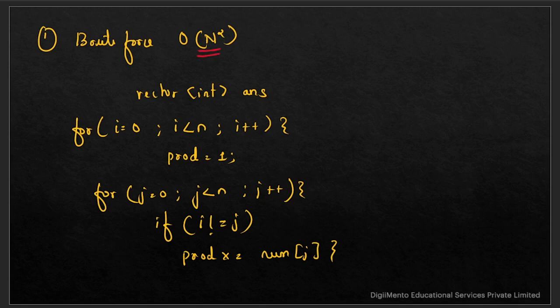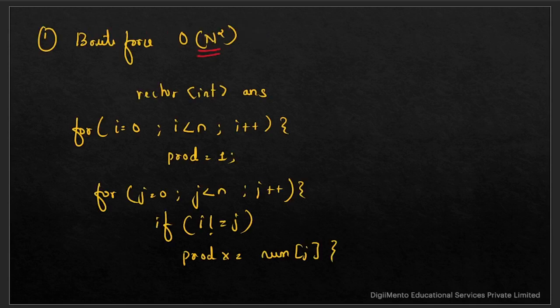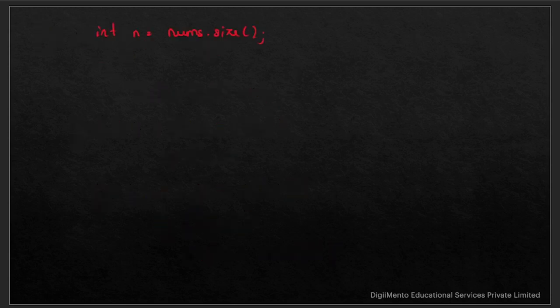The time complexity for the brute force approach is O(n²) because we have a loop inside a loop, both running till n. This is not an optimal approach. Let's see the actual code and then optimize it further. We take int n = nums.size(), create a vector answer of size n.